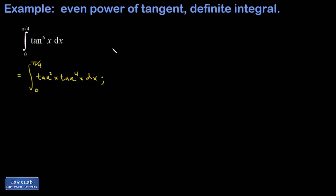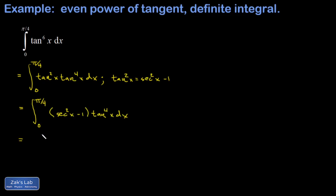Using the Pythagorean identity for tangent and secant, I can write tan²x = sec²x − 1. This is advantageous because secant squared is actually the derivative of the tangent function, and that's going to give me the right differential to guess one of the antiderivatives. So I replace tangent squared using that identity.